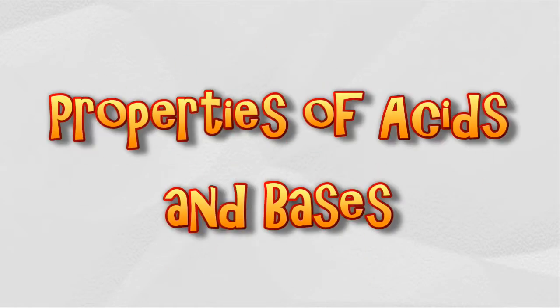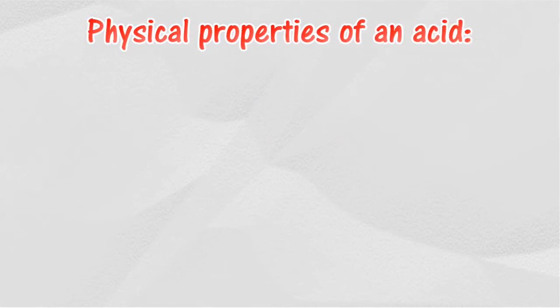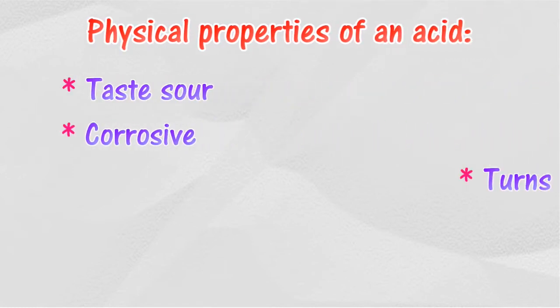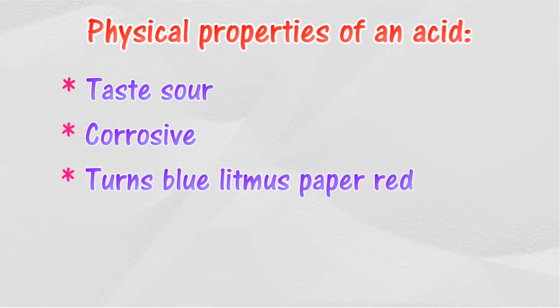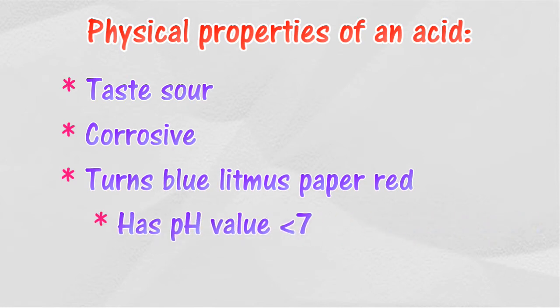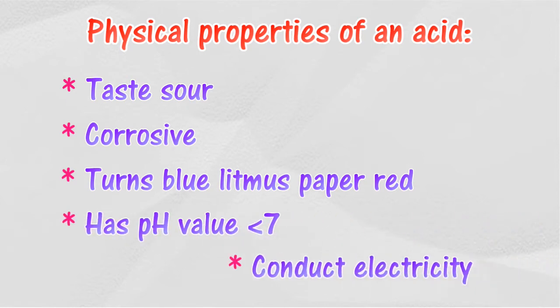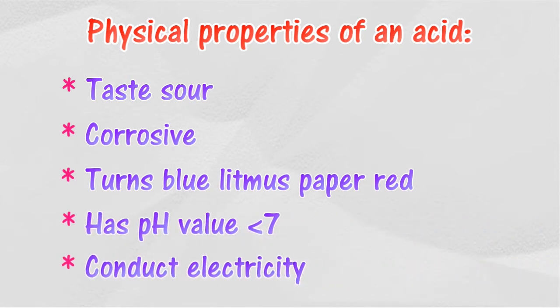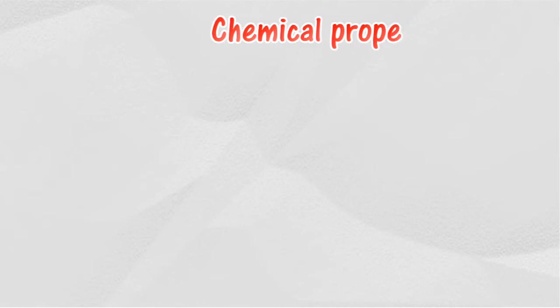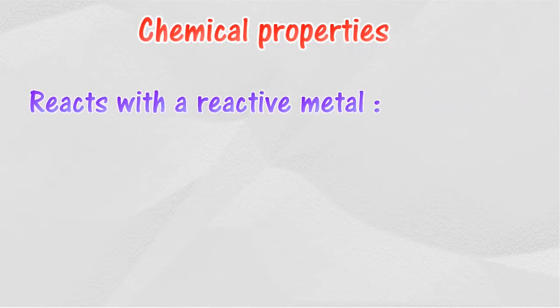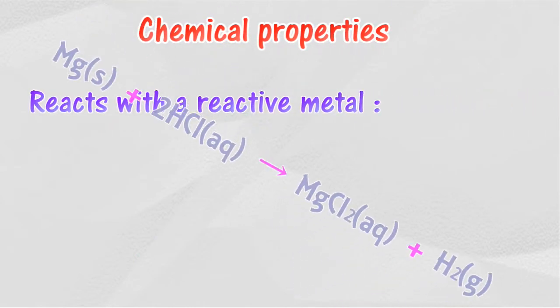Properties of acids and bases. An acid has the following physical properties: it tastes sour, is corrosive, turns blue litmus paper red, has a pH value below 7, and conducts electricity.